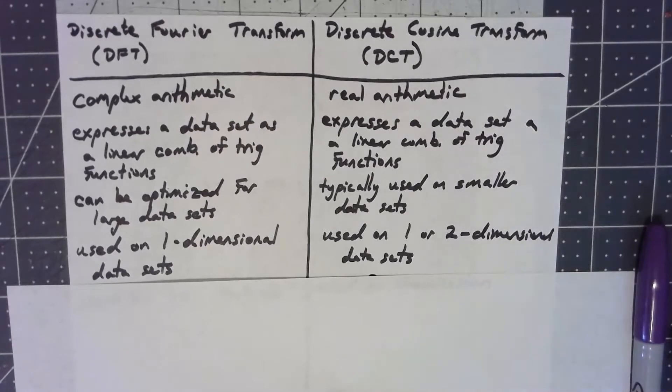This is huge for the types of applications we're going to be doing with it because it allows us to do things like image compression, where the data is stored not in just a single vector, but in a matrix.